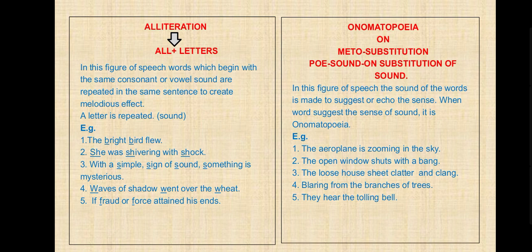Onomatopoeia — in this figure of speech, the sound of the words is made to suggest or echo the sense. When words suggest the sense of sound, it is onomatopoeia. Examples: 'The aeroplane is zooming in the sky' — 'zooming' suggests the sound. 'The open window shuts with a bang' — 'bang' indicates sound. 'The loose house sheet clattered and clanged' — 'clatter' and 'clang' are used for sound. 'Blurring from the branches of a tree' — 'blurring' used for sound. 'They hear the trolling band' — 'trolling' used for sound.